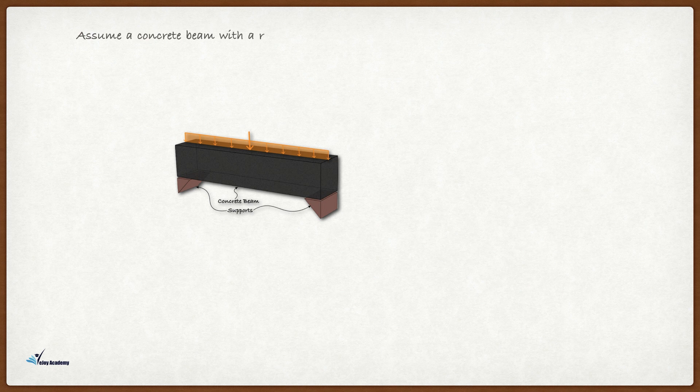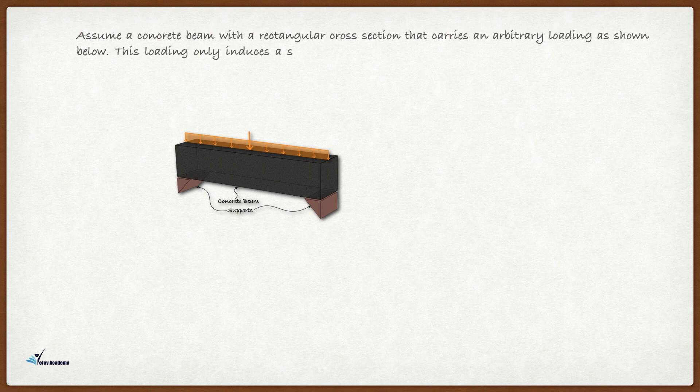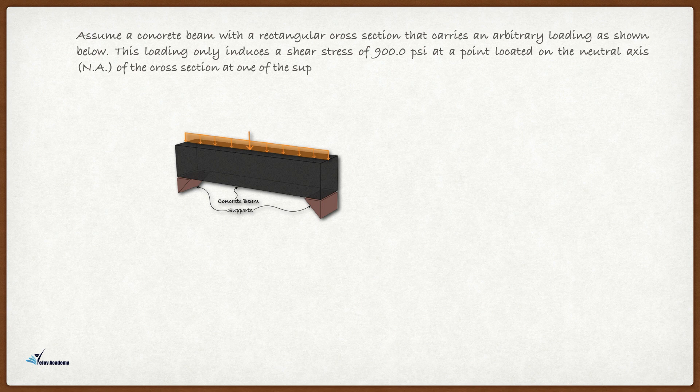Assume a concrete beam with a rectangular cross-section that carries an arbitrary loading as shown below. This loading only induces a shear stress of 900 psi at a point located on the neutral axis of the cross-section at one of the supports. Calculate the maximum tensile stress at this point.